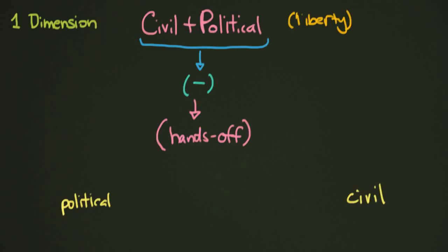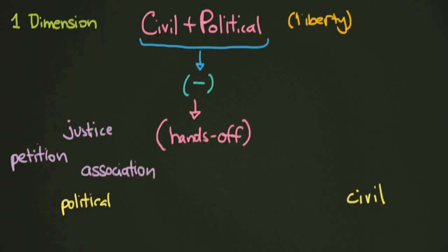On the political side we might talk about things like the right to petition or the right to justice — very practical things like being able to go to a court and be seen equally and fairly. Maybe something like freedom of association could be considered here, or your freedom to assemble with whoever you feel fit to. These political rights are really about exercising your rights as a citizen in a political way.